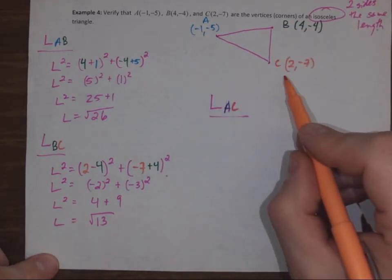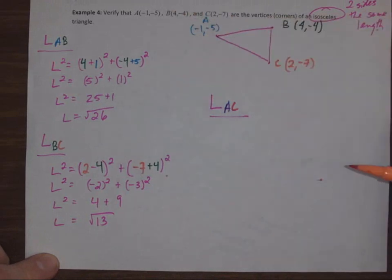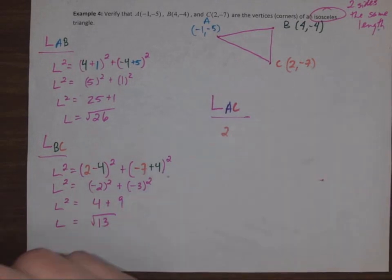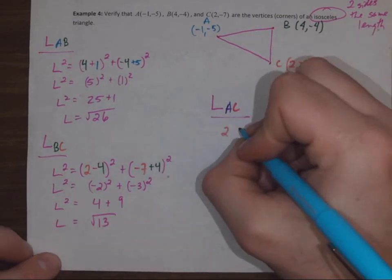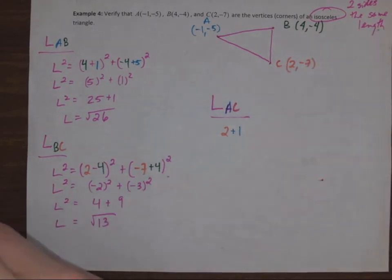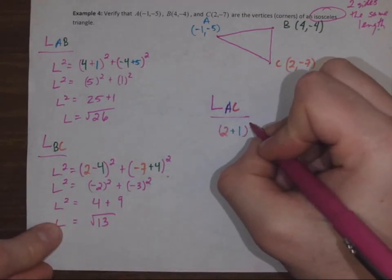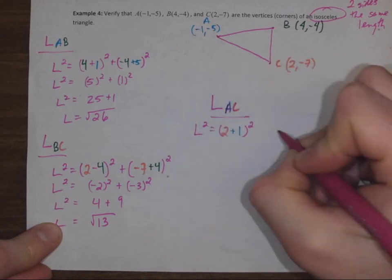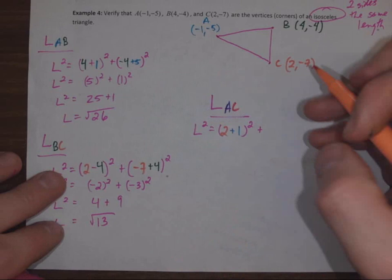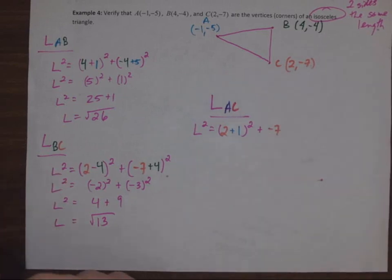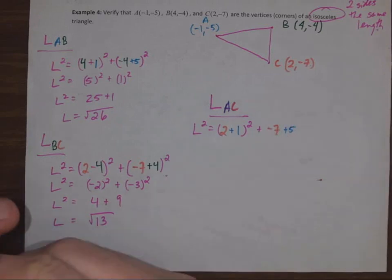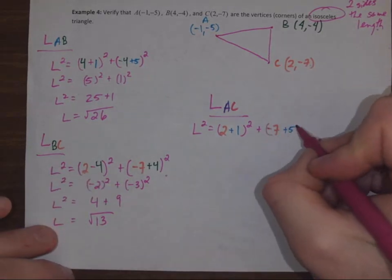Once again I can measure it this way or I can measure it that way. Two take away negative one is two plus one, all squared, plus negative seven take away negative five, which means add five, and that entire thing squared.